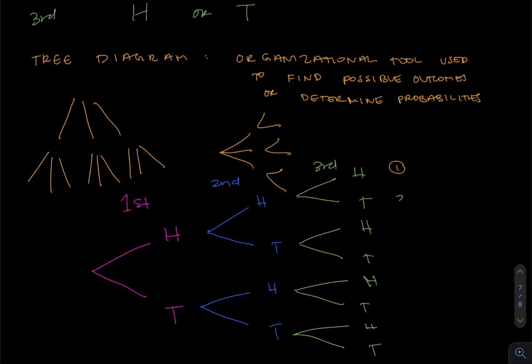And if we march down the tree diagram here, we have one, two, three, four, five, six, seven, eight different branches going on here.